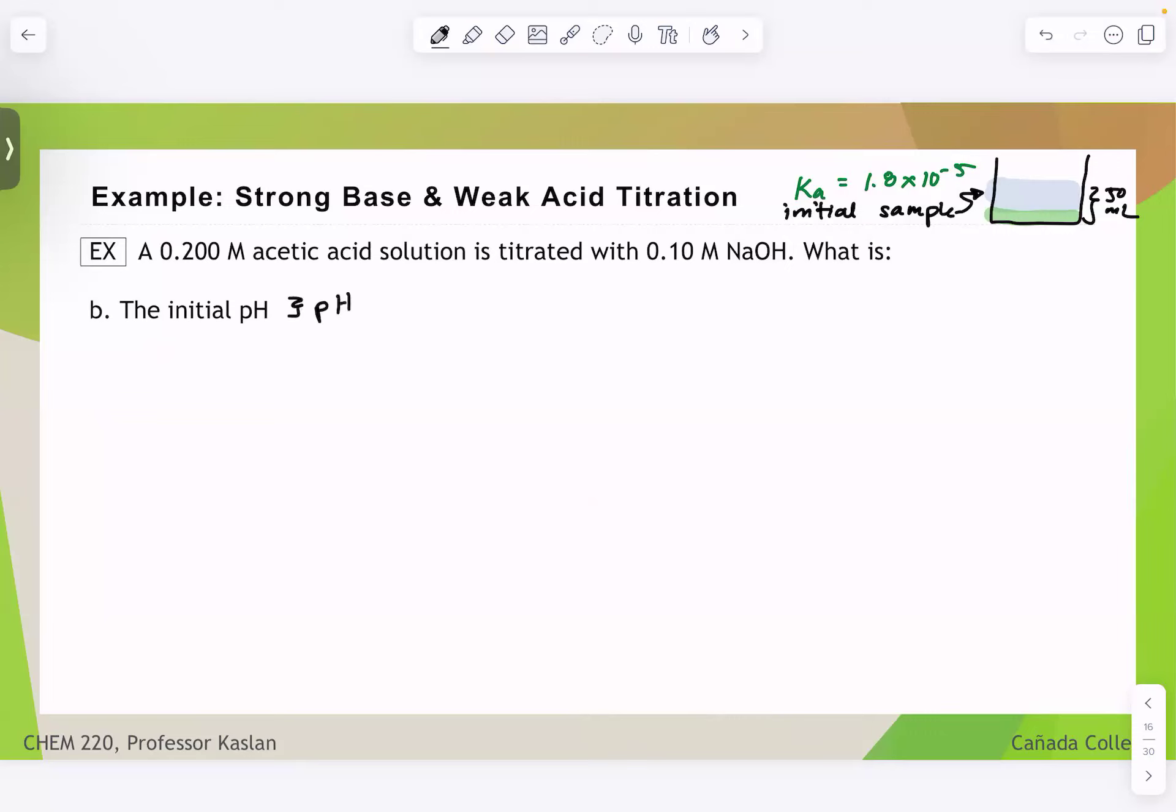So this is the pH of the acetic acid sample before any hydroxide has been added. So before we've even begun the titration, we put our pH probe into the beaker, and we are now going to theoretically calculate what that pH should be reading at.